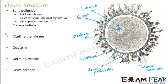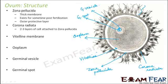Corona radiata consists of two to three layers of cells attached to zona pellucida. So the corona radiata is two-layered or three-layered cells connected to zona pellucida. What does it do? It supplies vitamins and proteins to the cell — so the nutrients and nourishment are provided by corona radiata.